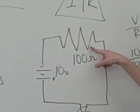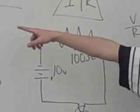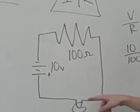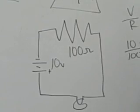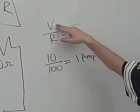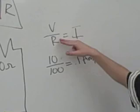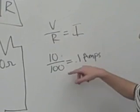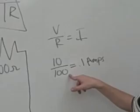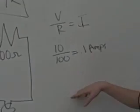Here I have a sample circuit, which has a resistor with 100 ohms, and has 10 volts, and you have to find the current. Well, first you find current by doing volts divided by resistance, which will be your current. So 10 volts divided by 100 ohms will get you 1 amp in your circuit.